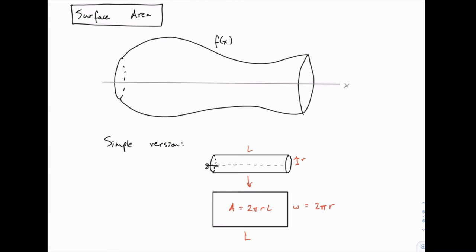So how can we use that on the more complicated version up above? Well, similarly we can talk about the radius of this object. Now this is a changing radius, but that's going to be equal to whatever the function is.